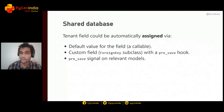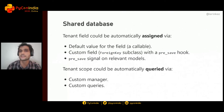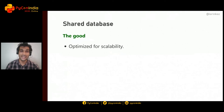Some automation is possible: use a default value for the tenant field as a callable function like `get_current_tenant`, a custom field subclass with a pre-save hook, or a pre-save signal on relevant models. For querying, some packages use custom managers and custom querysets to automatically inject the active tenant into queries — though for sub-queries or certain database annotations you may still need to pass the tenant explicitly.